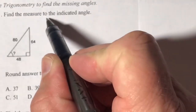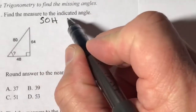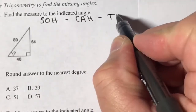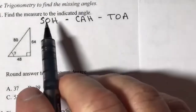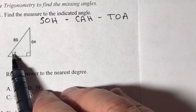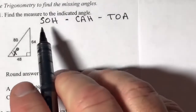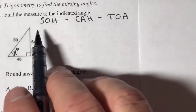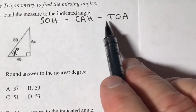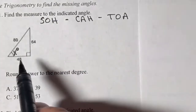I want you to use the acronym SOH-CAH-TOA. Sine of x degrees is equal to opposite over hypotenuse. Cosine is equal to adjacent over hypotenuse. And tangent is equal to opposite over adjacent.